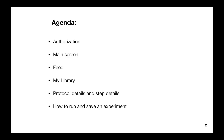First, we start by describing authorization — what we allow to guest users, what we allow to authorized users, and details about this process. After that, we will talk about the main screen, its structure, and then we will go to Feed and My Library to discuss how we show protocol details and step details, and our main question for today is how to run and save experiments.